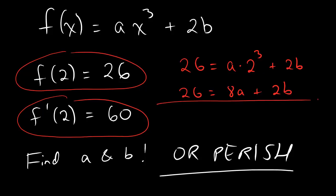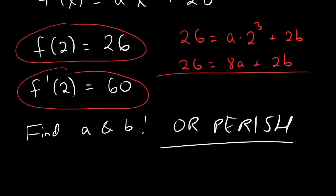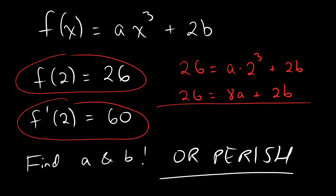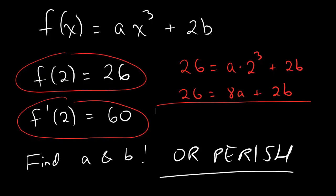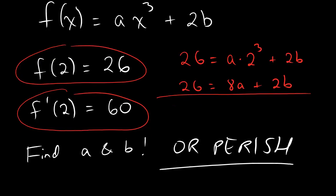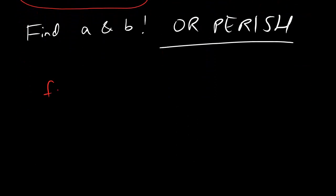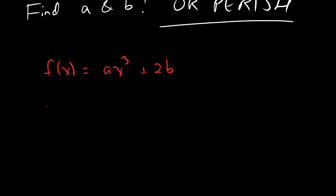And now let's write down the fact that f prime of 2 equals 60. The first thing we've got to do is actually compute f prime of 2. So, check it, dogs. We want to take the derivative of this puppy, and let's be a little bit careful about it. So, I'm going to rewrite it here. We've got ax cubed plus 2b, and we want to take the derivative. Well, when you do this, remember that a and b are constants.